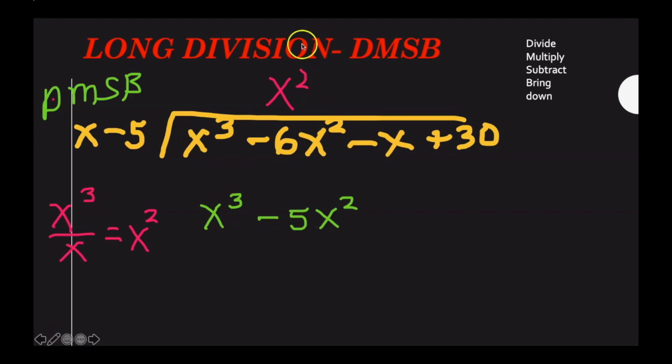So now we multiply through x squared times x, x cubed, x squared times negative 5, negative 5x squared. Now that's divide, then we multiplied. Here's the divide, here's the multiply. Now we subtract. Subtract means I change this positive to negative, negative to positive, and I add them. And then I bring down. So as I do this, this gave me negative x squared, and I bring down the next column, negative x. Then I start over.